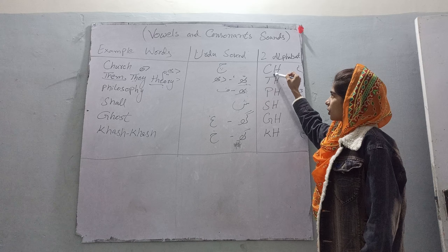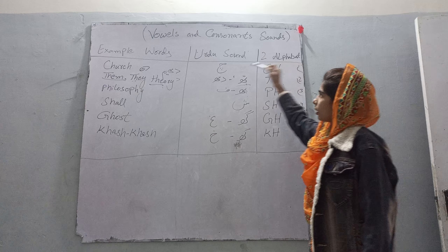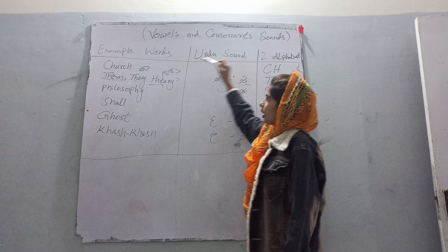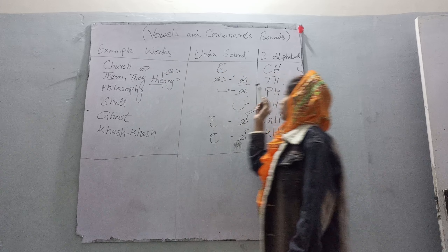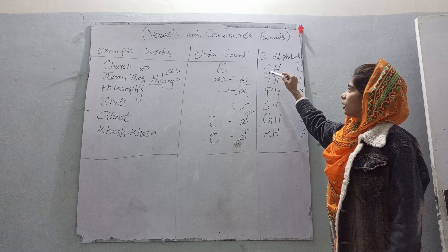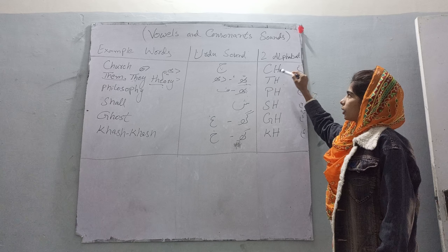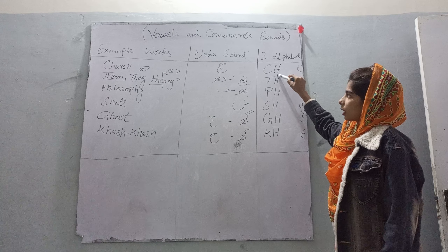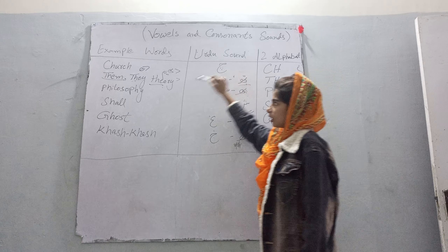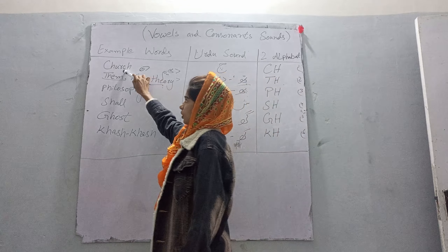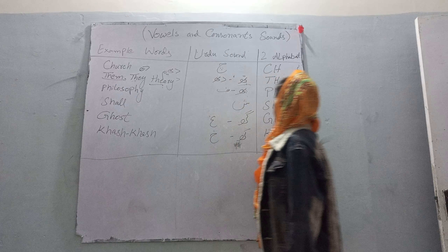Ch — two alphabets, two sounds, and this is the word. Ch is two alphabets, and the sound is Ch. Ch is Church.